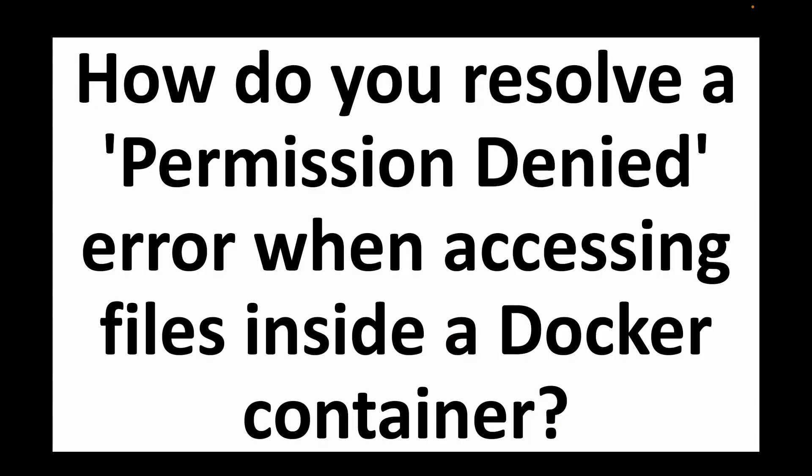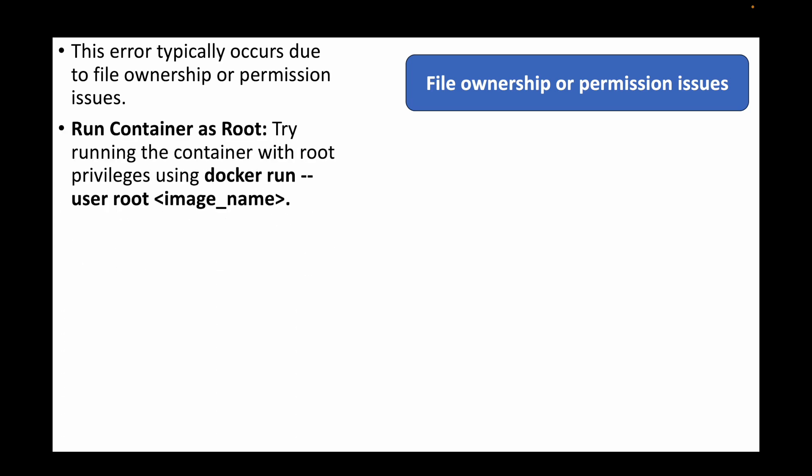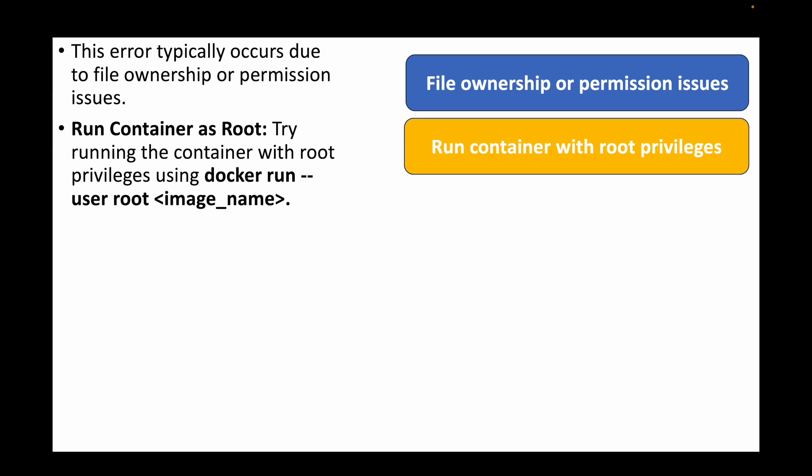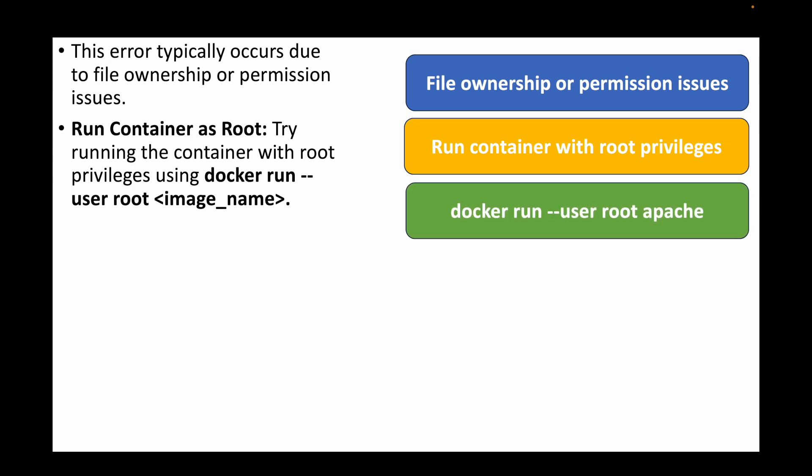The next question is: how do you resolve a 'permission denied' error when accessing files inside a Docker container? This error typically indicates a file ownership or permission issue. One option is to run the container as root — using the `--user root` argument in the `docker run` command — so that file permission issues are bypassed.